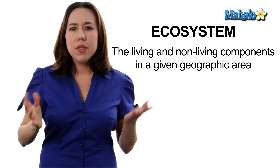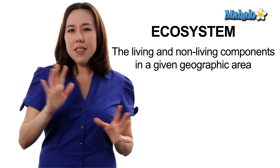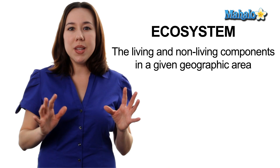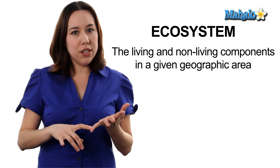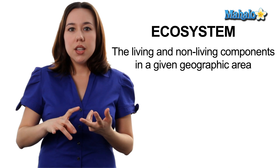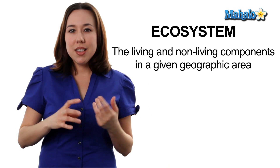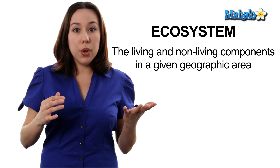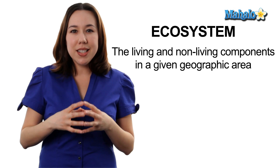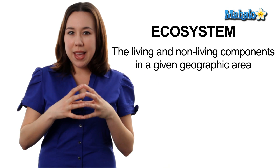What is an ecosystem? Well, it's pretty much all of the living organisms as well as the non-living components like hydrogen, oxygen, carbon, nitrogen, sunlight, water, and soil — all of these things interacting within a given geographic area.